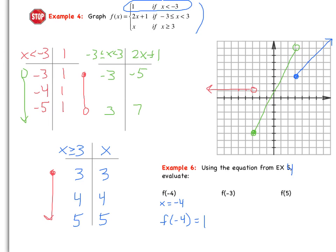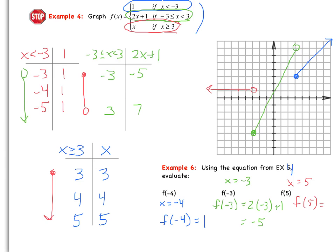For f of negative 3, I'm asking what is f of x when x is negative 3. Which case is satisfied? When x equals negative 3, it falls under the middle domain — negative 3 less than or equal to x less than 3. So we plug into the middle piece: f of negative 3 equals 2 times negative 3 plus 1, which gives negative 5. Finally, for f of 5, which case is satisfied when x equals 5? That's the last case — 5 is greater than or equal to 3 — so f of 5 equals 5.